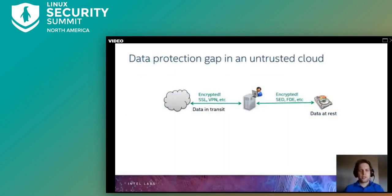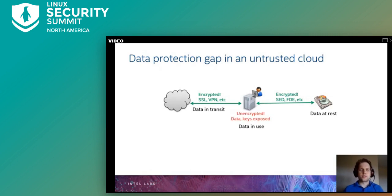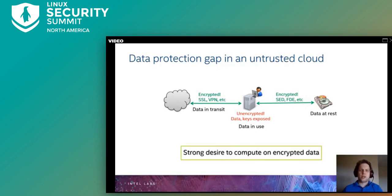This talk is about the data protection gap that exists in untrusted clouds. Sensitive data is encrypted while it is in transit and at rest, but it is not while it is in use. As a result, sensitive data may be exposed to the cloud's infrastructure system software while it is in use. This creates a strong desire to compute on encrypted data.